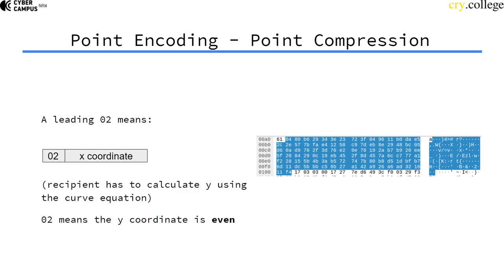Leading 02 means that only the x coordinate is included. Now the problem here is that there are two points with the same x coordinate, right? Two inverse points.